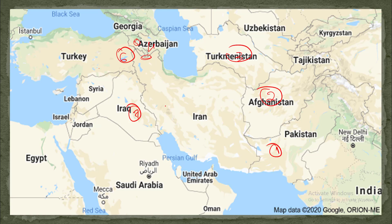There are two water bodies that border Iran. The first one is the Caspian Sea, which is the biggest landlocked sea in the world, and the second is the Persian Gulf.